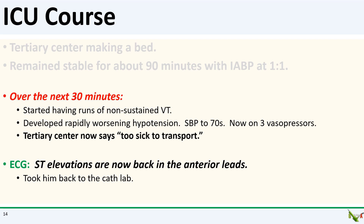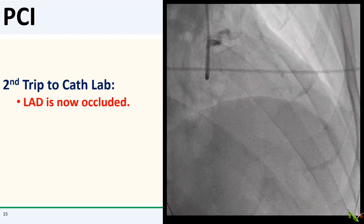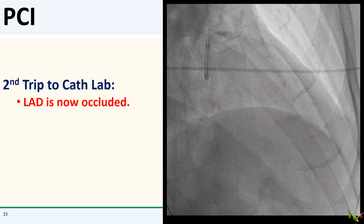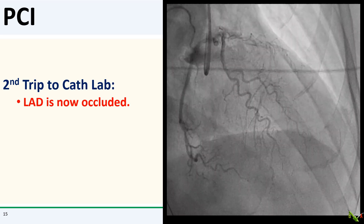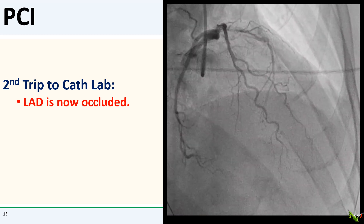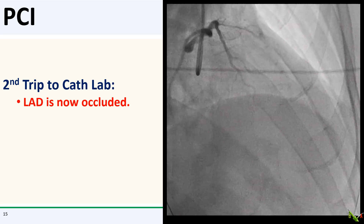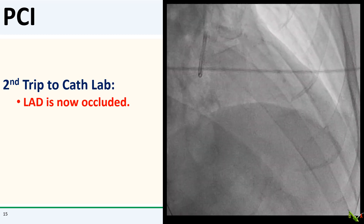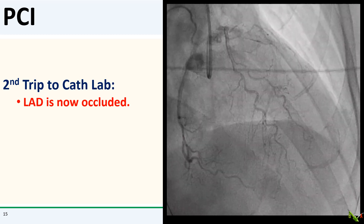But then he started to deteriorate very quickly. He started developing runs of non-sustained VT, then his blood pressure started falling quickly, eventually requiring three vasopressors to maintain blood pressures in the 70s. I called the tertiary center, and he was now too sick to transport. He also now had subtle ST elevations back in the anterior leads, and I had to take him back to the cath lab. As I expected, the LAD was now completely occluded. You can still see the dissection with dye staining from the ostium all the way down to the mid-LAD, and then the LAD is completely shut down after that. With the RCA CTO, he was getting no perfusion to his anterior or inferior wall at this point.